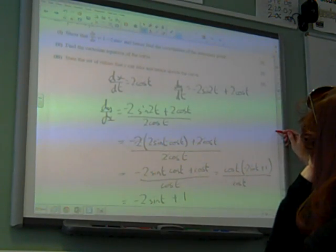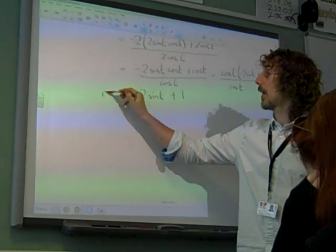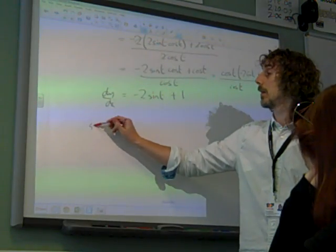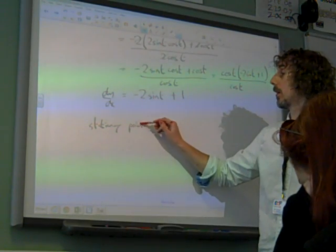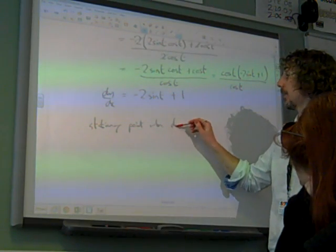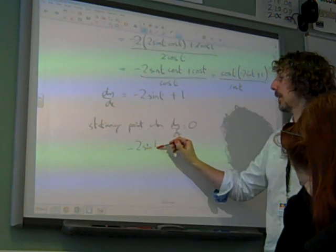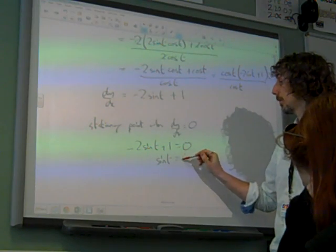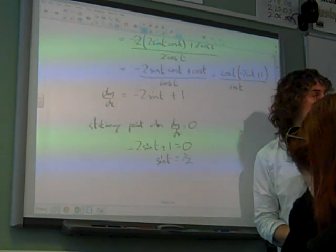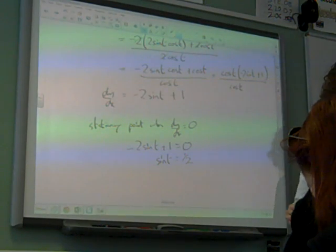It then did say, and hence find the coordinates of the stationary point. That's dy/dx. Stationary point is when dy/dx equals 0. So minus 2sin(t) plus 1 is 0, so sin(t) is 1 half. And of course, we're differentiating with calculus, so we must be working in radians.